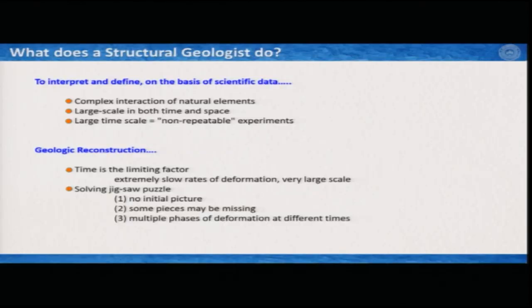You do not have any initial picture of how it was before. You do not have the entire picture because some pieces are missing — you cannot access all the areas, and even if you can, maybe there is no exposure. On top of that, the deformation we look at on the surface is not a single deformation. One deformation happened some time ago, and then later some other deformation occurring from other directions — either demolishing or overprinting the previous deformation.